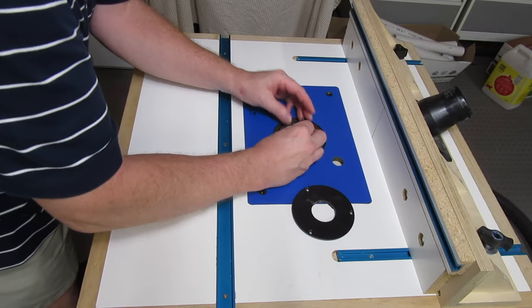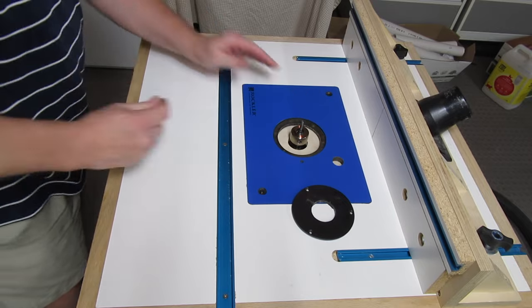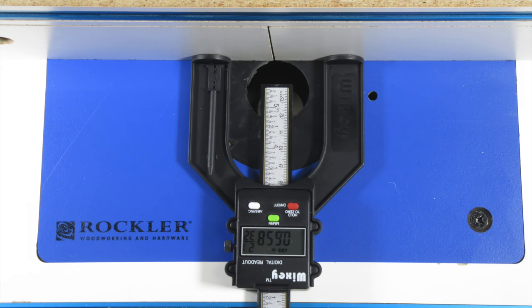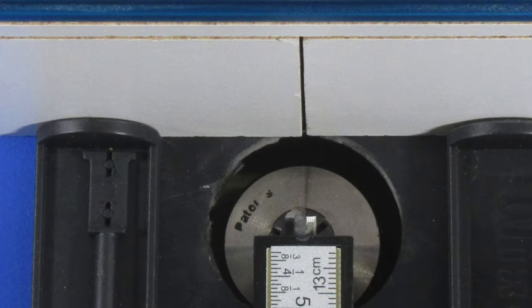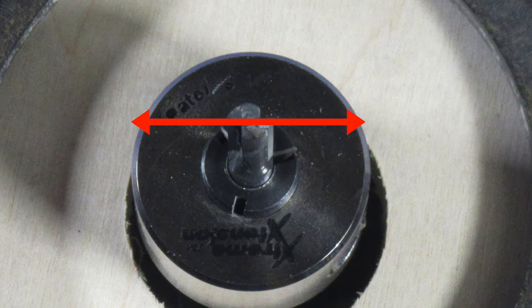I'm going to cut the dado first with a quarter inch bit. As I said earlier, I want the center of the dado to be a half inch from one edge, so I'm using this digital gauge to help me set the fence. I'd really like to measure from the center of the bit, but I can't do that easily, so I'll measure from the back of the bit, which will add half the diameter of the bit to the distance.